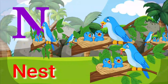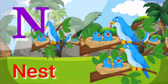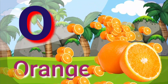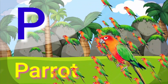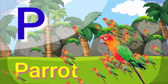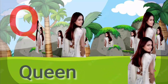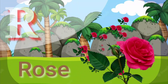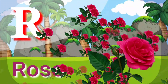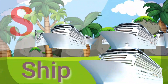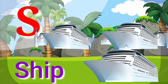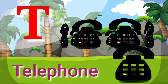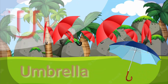N for nest, O for orange, P for parrot, Q for queen, R for rose, S for sheep, T for telephone, U for umbrella.